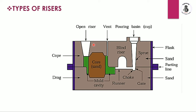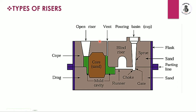Another riser you can see here is the open riser. The molten metal travels toward the mold cavity, and after filling the mold cavity it rises into the riser, ensuring 100% filling of the mold cavity with molten metal. There are two kinds of risers used here: one is the open riser and one is the blind riser.